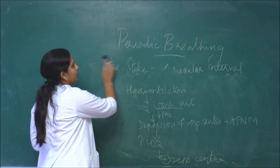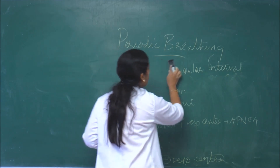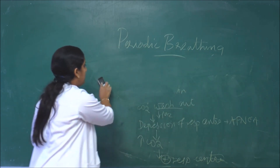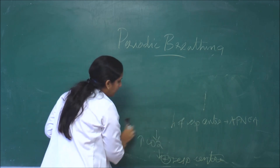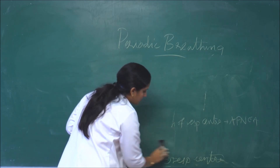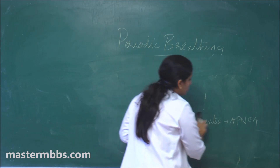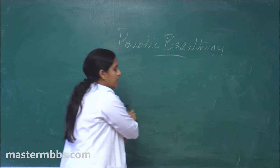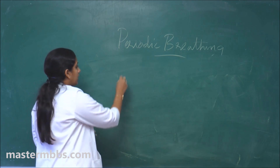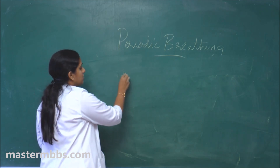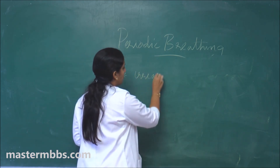Next is Biot's breathing. Biot's breathing is also a type of periodic breathing in which there is an alternate period of respiratory activity and apnea. Here also there will be an alternate period of respiratory activity and apnea, but the characteristic feature is that it is occurring at irregular intervals.